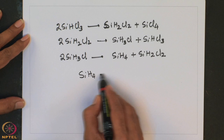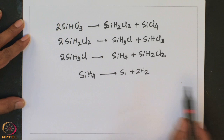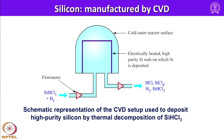SiH4 can readily decompose to give Si plus 2H2. In the typical CVD setup, SiHCl3 plus H2 is passed over a silicon surface on which silicon vapours are deposited. The gaseous byproducts — HCl, SiCl4, H2, and SiHCl3 — escape and can be collected by cooling or condensation. Extraction of tin from its ore depends on redox chemistry.